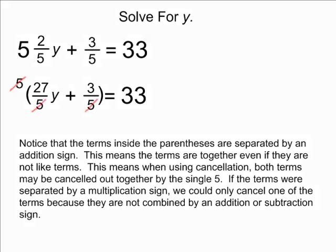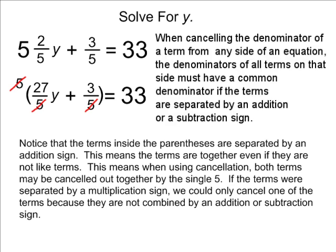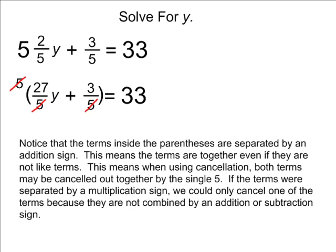Notice that the terms inside the parentheses are separated by an addition sign. This means the terms are together even if they are not like terms. When using cancellation, both terms may be canceled out together by the single 5. If the terms were separated by a multiplication sign, we could only cancel out one of the terms because they are not combined by an addition or subtraction sign.